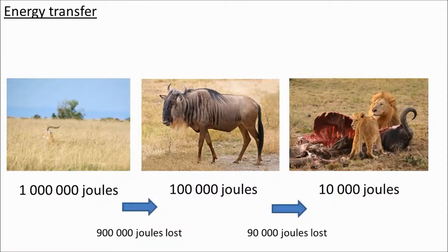Now lions come along and eat all of those wildebeest. Of the 100,000 joules of energy, again most of it is lost. So eventually let's say you have 10,000 joules of energy in the tissues of the lion. The point I'm trying to make is: energy is lost at every stage in the food chain.